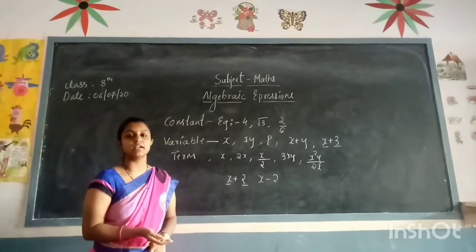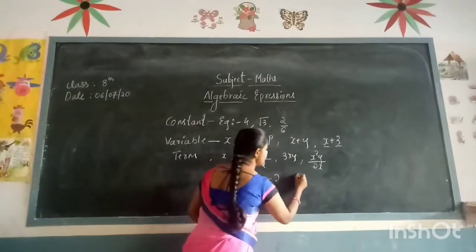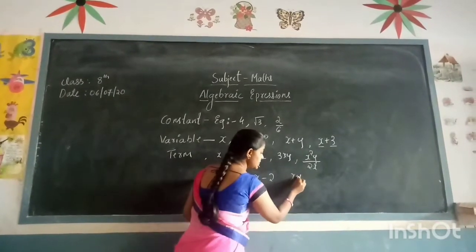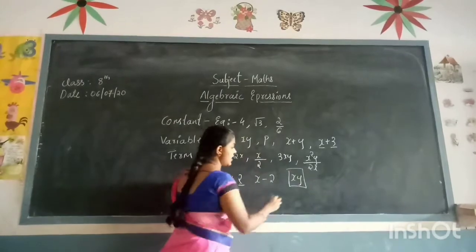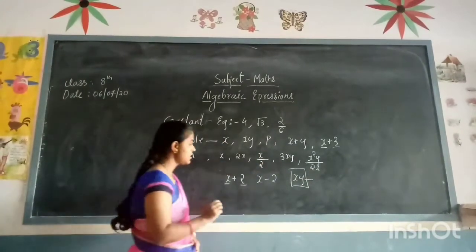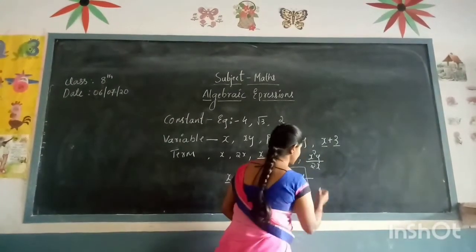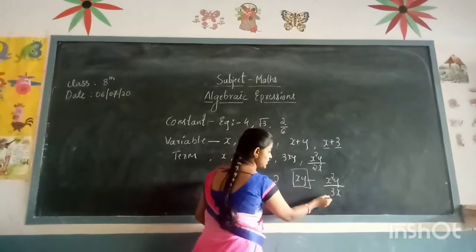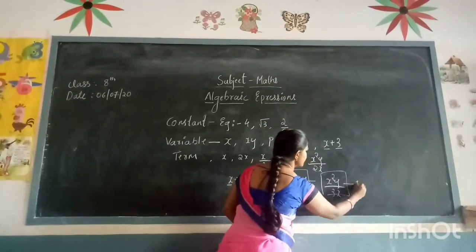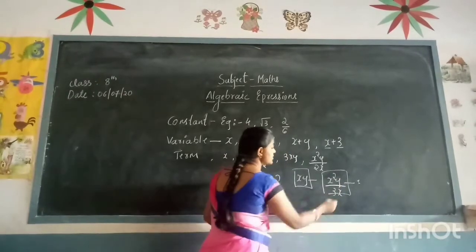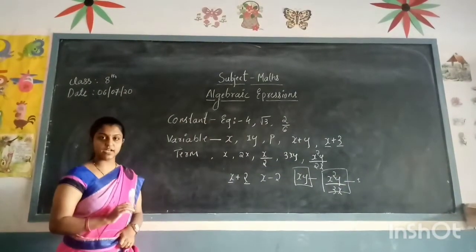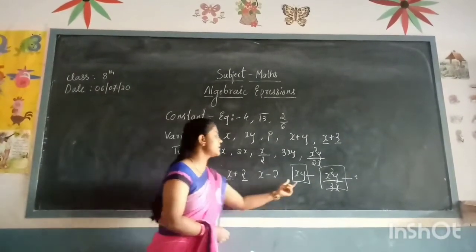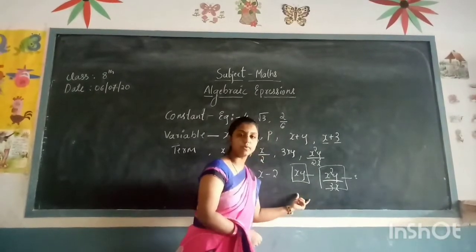Multiplication and division will give us a single term only. For example, if I have 2xy — here you have two variables, but the multiplication symbol makes this whole expression a single term only. Another example for division: x squared y by 3x — here there is a division, but still it is a single term only. Multiplication together with division is also called a single term. Addition and subtraction divide the terms, but multiplication and division give us a single term only.